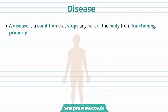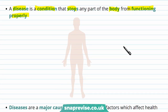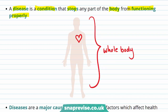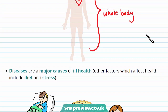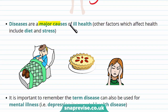So now let's talk about disease. A disease is a condition that stops any part of the body from functioning properly. For instance, cardiovascular disease stops a heart from functioning properly. Also, different diseases can interact to affect many different parts of the body, and diseases can also affect the whole body. Diseases are major causes of ill health.